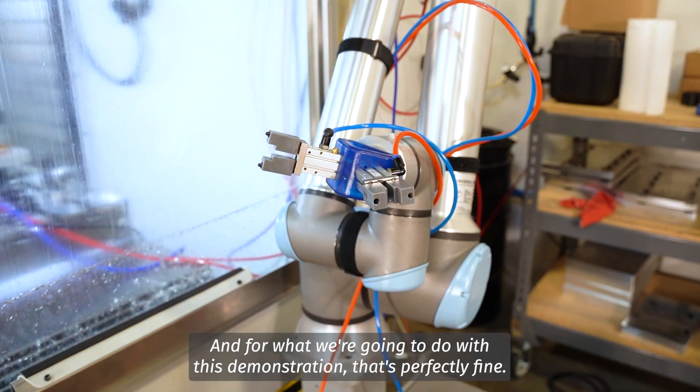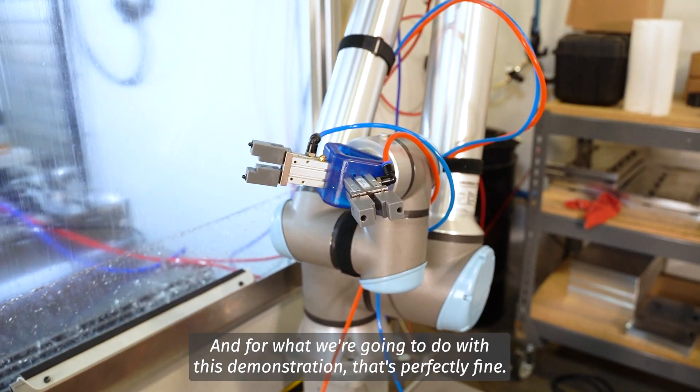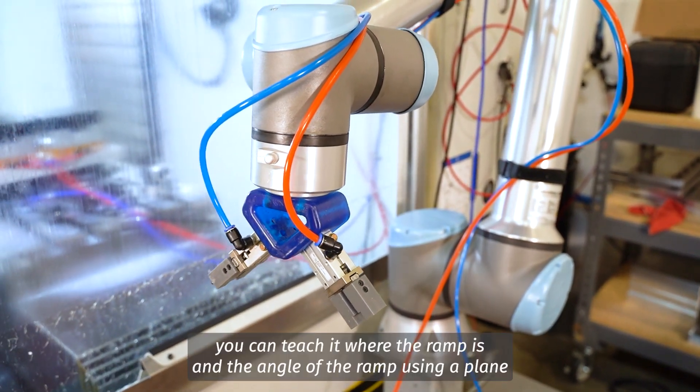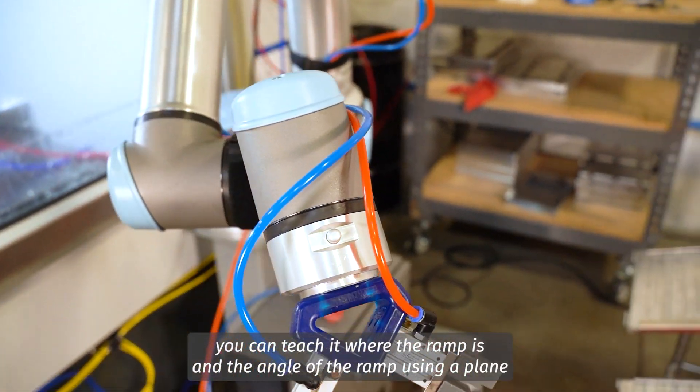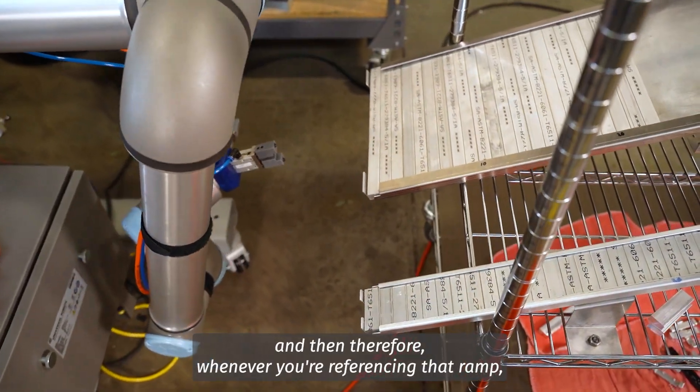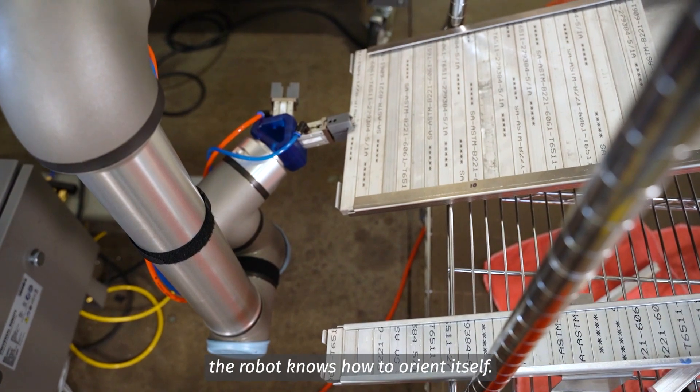So right now we're jogging relative to the base, which is the base of the robot right here. And for what we're going to do with this demonstration, that's perfectly fine. If you want to set up a different feature, for example these ramps, you could teach it where the ramp is and the angle of the ramp using a plane, and then therefore whenever you're referencing that ramp, the robot knows how to orient. That it's a 20 degree angle? Exactly.